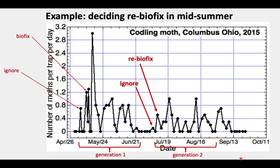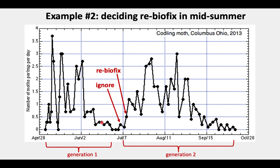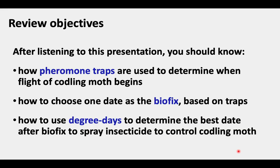Second generation then occurred over the next month or so. Here is another example from a different year where, again, we had all these ups and downs of first generation. But first generation moths had fallen off — down to zero for just a short while. We had some detection that we ignored, and then a short while later we thought that was a surge and called re-biofix. Then we had this second generation that lasted for about two months.